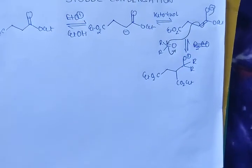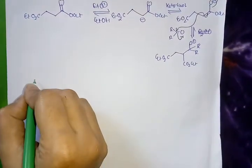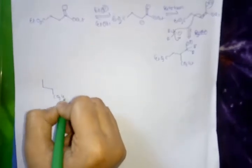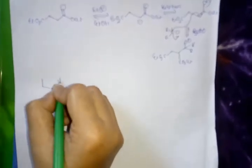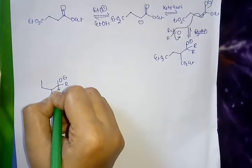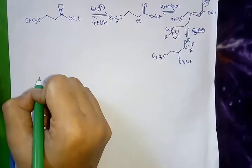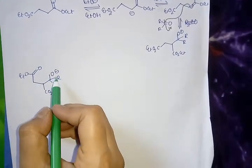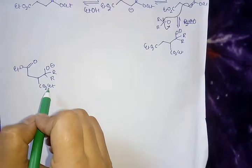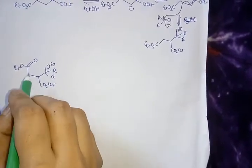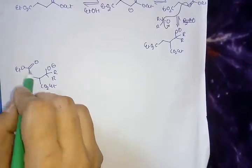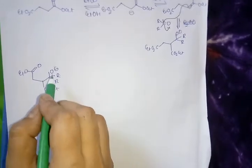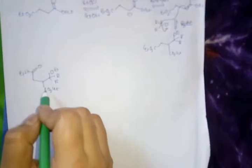Now cyclization occurs. By rearranging the adduct we can write this. Now this O-negative can attack two ester carbons. Here two ester groups are present. But if it attacks to this carbon, then a four-member ring will form.